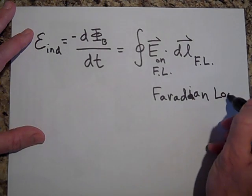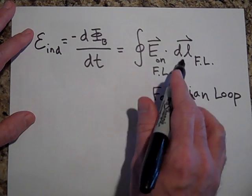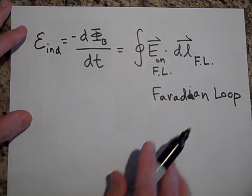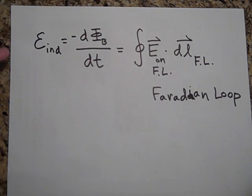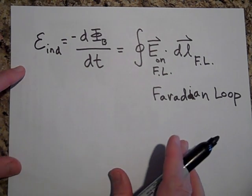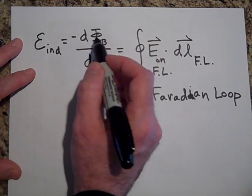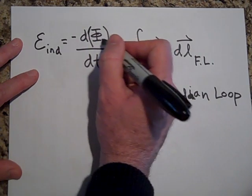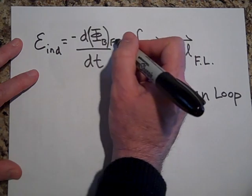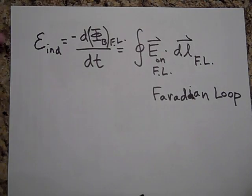The E is not just the E any place, it's the E on the Faradaian loop, and the DLs make up the Faradaian loop. A Faradaian loop is just an imaginary loop, like a Gaussian surface or an Amperian loop. The magnetic flux is the magnetic flux that passes through the Faradaian loop.